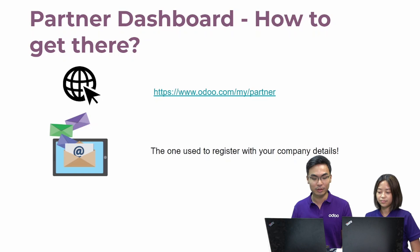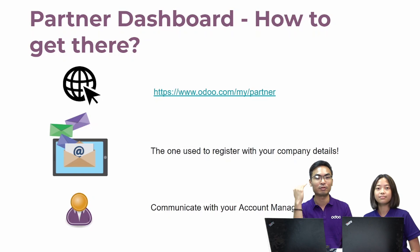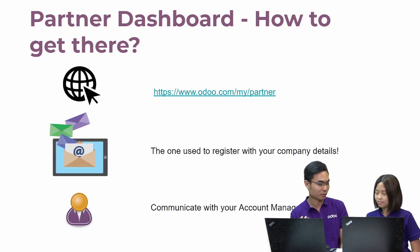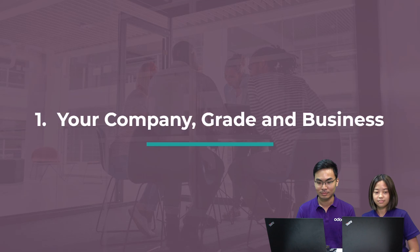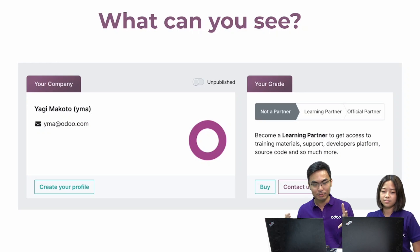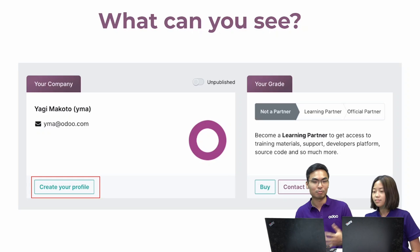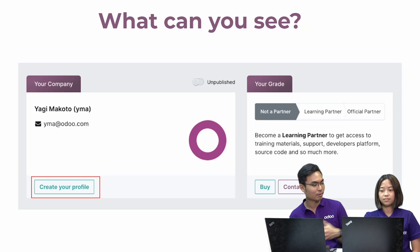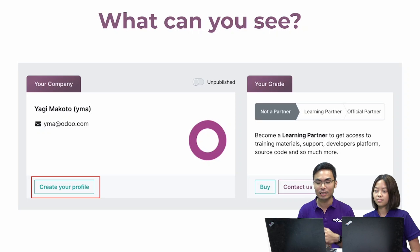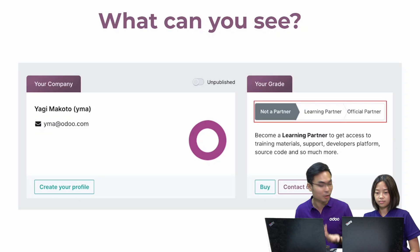If you have any further questions, you can communicate with your account manager, as he or she will be the one that actually tries to assist you to ensure your successful journey with Odoo. So first, your company grade and business. As you can see, there is a company profile that you can create to put your company details, what are your strengths, what you specialize in, and people can refer to it. Next to it is showing your grade here in Odoo.